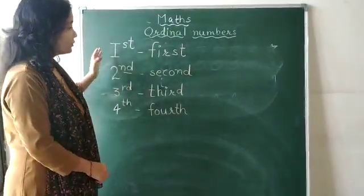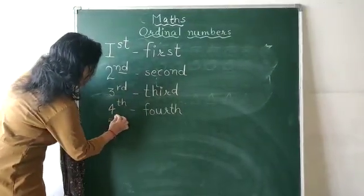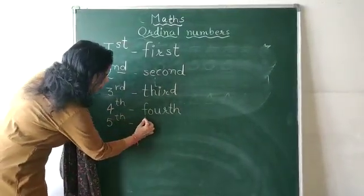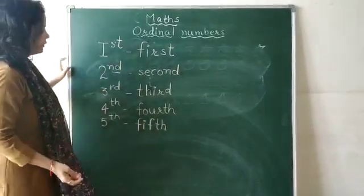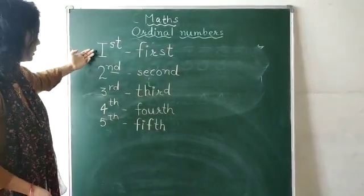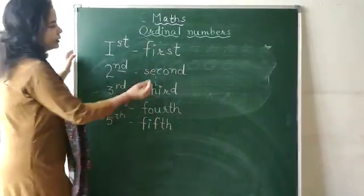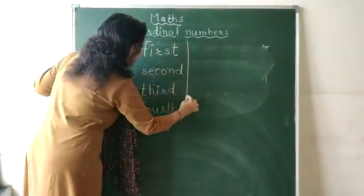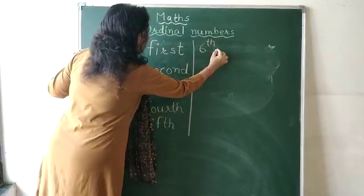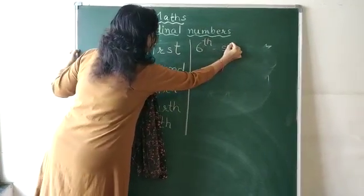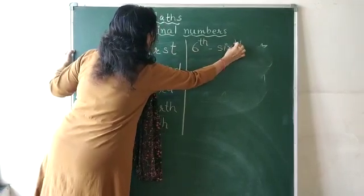Now, I will write 1st to 10th. 5th. FIFTH. So, you can see 1st, 2nd, 3rd, 4th, 5th. Okay? I will write here. 6th. SIXTH.